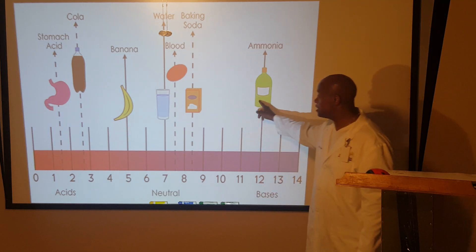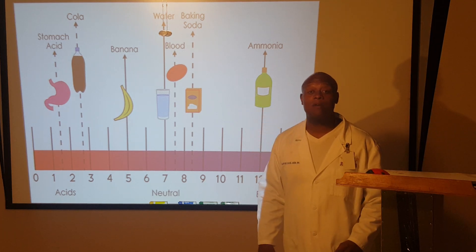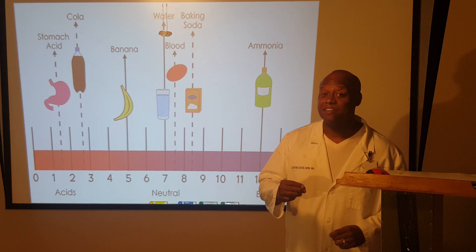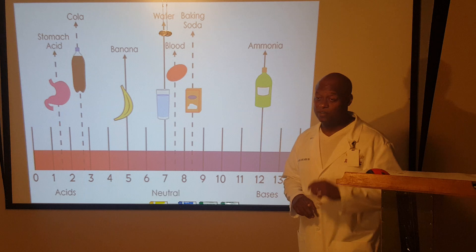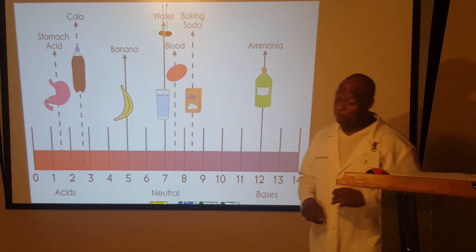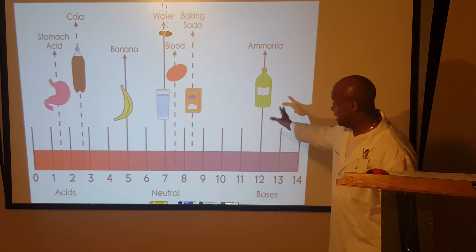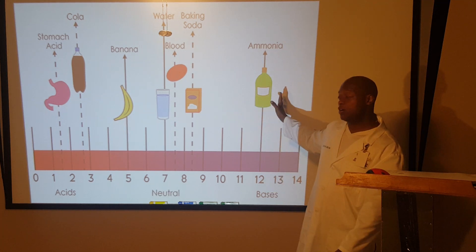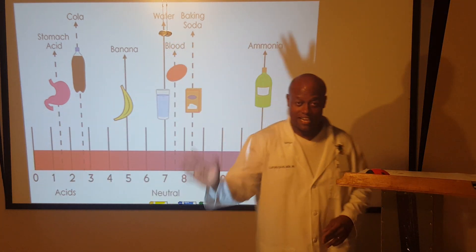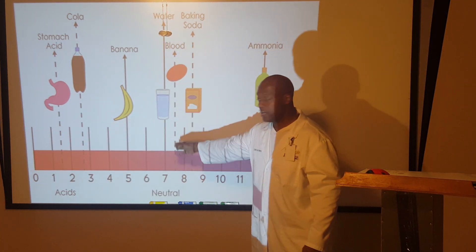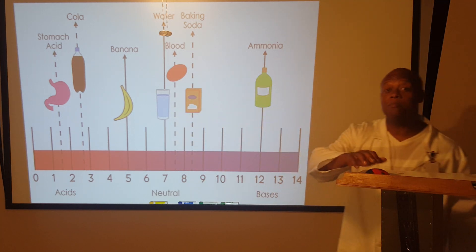Also up in the alkaline range is ammonia, and hair products containing lye — used to straighten hair — which is why they can burn the scalp. The key takeaway: anything too far toward the acidic end burns, and anything too far toward the alkaline end burns too. The safest area is right in the middle with water. On both extremes, burning occurs.